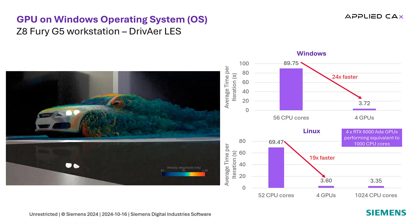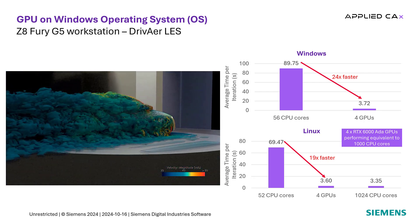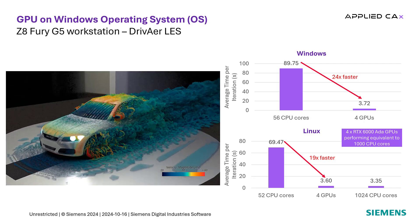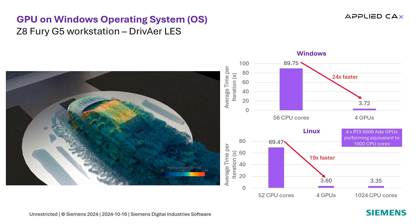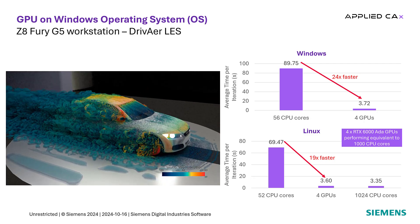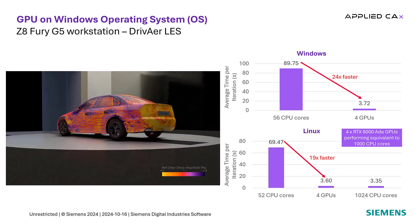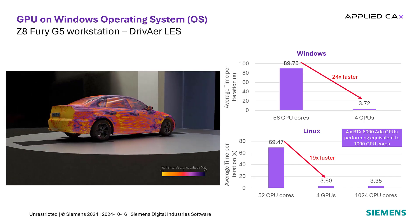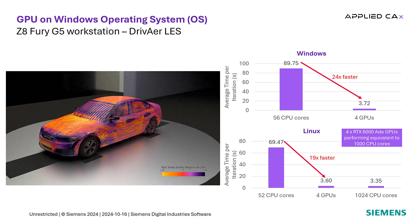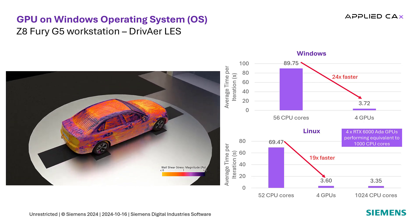Our final example is an aerodynamics case using large eddy simulation in a detailed drive-air model with 128 million cells. In addition to comparing CPU to GPU performance, this model also compared the new capability in 2410 of using GPUs on Windows. The Windows workstation had 56 Intel CPU cores and 4 NVIDIA RTX A6000 GPU cards. The Linux machine had 52 Intel CPU cores and 4 NVIDIA RTX A6000 GPU cards. An additional Linux run was also performed on a cluster with 1024 CPU cores. We see from this study that GPU computation on both the Windows and Linux machines provides similar improvements to reducing computational time, and we actually get a bit better results running on Windows. The final Linux study showed that we would actually need 1024 CPU cores to achieve the same performance as using 4 GPU cards.